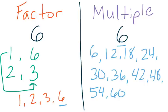Notice how factors and multiples are related but also different. Our multiples are always going to be either our number or greater than our number. Our factors are always going to be our number or less than our number. But they do have a common thread through them. If we looked at the number 12, 6 is a factor of 12; 6 is a factor of 18; 6 is a factor of 24. So all of these multiples have a common factor of 6.